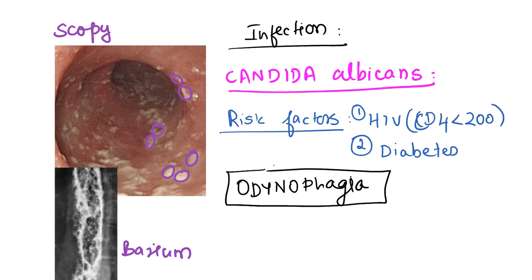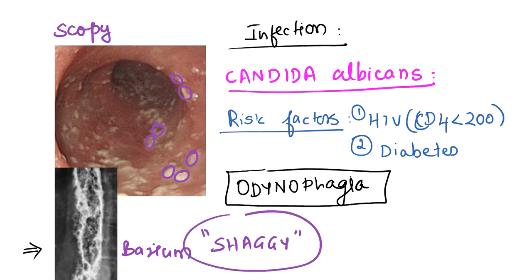In the barium swallow finding, you can see multiple filling defects due to the thrush present in the esophagus. This is called the shaggy appearance of the esophagus — an additional point to remember when studying eosinophilic esophagitis, as esophageal candidiasis can be studied as a differential diagnosis.